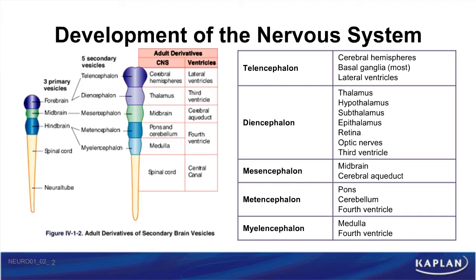The diencephalon also gives rise to the retina, the optic nerves, and the third ventricle. The mesencephalon gives rise to the midbrain and the cerebral aqueduct. The metencephalon gives rise to the pons, the cerebellum, and the fourth ventricle. Lastly, the myelencephalon gives rise to the medulla and fourth ventricle.